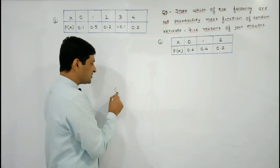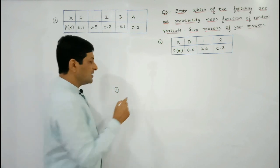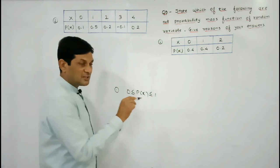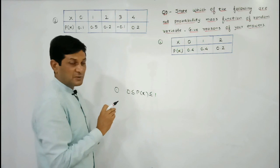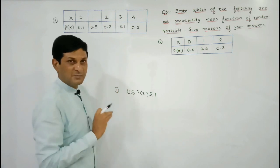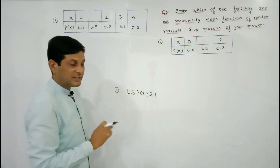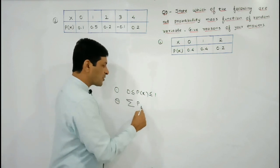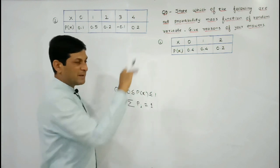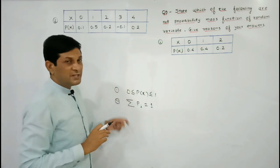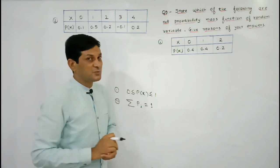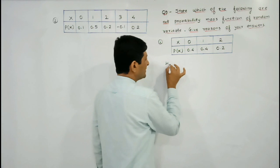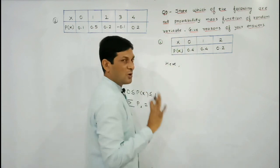Let us revise the definition of a probability mass function. P(x) is a PMF if it satisfies two conditions. First condition: the value of probability should be greater than or equal to 0 and less than or equal to 1 — meaning probabilities cannot be negative. Second condition: the sum of all probabilities must equal 1.